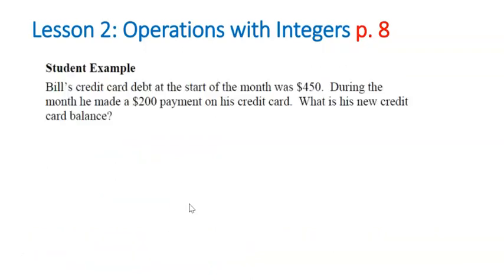Let's take a look at this as an example in a word problem. Bill's credit card debt at the start of the month was $450, so he is owing $450. That's a negative. During the month he made a $200 payment on his credit card. So he put some money on the credit card, so he added $200 positive, right? So what is his new credit card balance? Well, we know that he didn't pay off the card. He only paid $200.